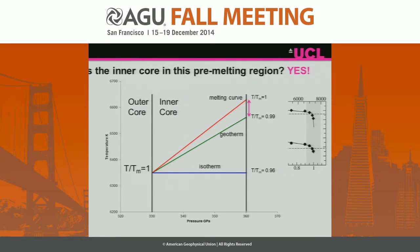Is the inner core in a pre-melting region? Almost certainly yes. Looking at a schematic of temperature versus pressure for the inner core: when the inner core crystallizes out of the outer core, it's effectively at its melting temperature — homologous temperature of one. Using Dario's melting curve and a standard geotherm, the inner core sits at around 99% of melting temperature, firmly in the pre-melting region.